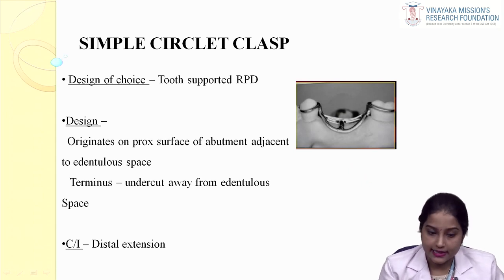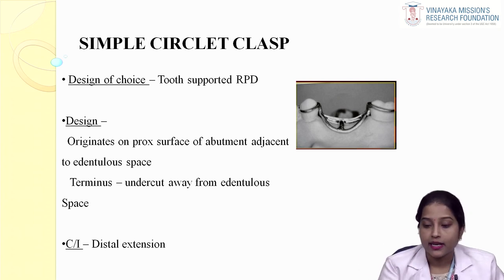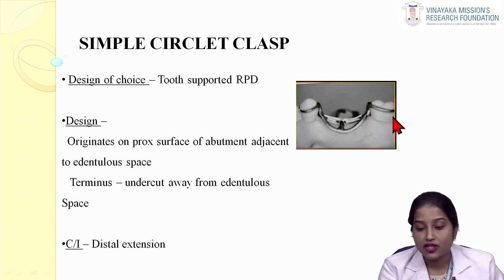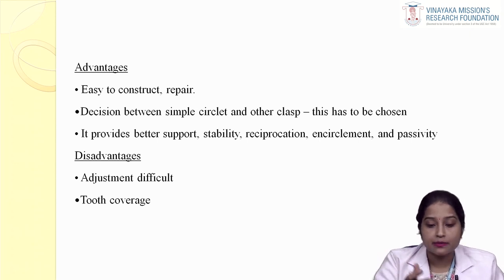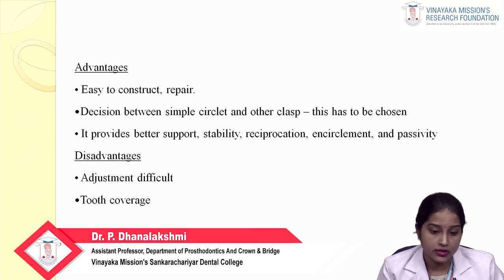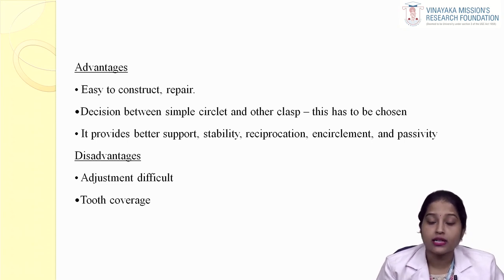The first circumferential clasp type is the simple circulate clasp, indicated for tooth-supported RPD and contraindicated for distal extension cases. Its origin is from the proximal aspect of the tooth adjacent to the edentulous area, and the terminus engages the undercut away from the edentulous area. Advantages: easy to construct and repair, and provides better support, stability, reciprocation, encirclement, and passivity. Disadvantage: adjustment is difficult since it is a cast alloy, and there is much tooth coverage.